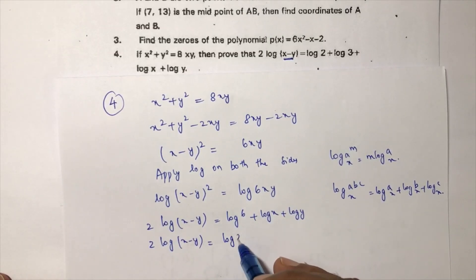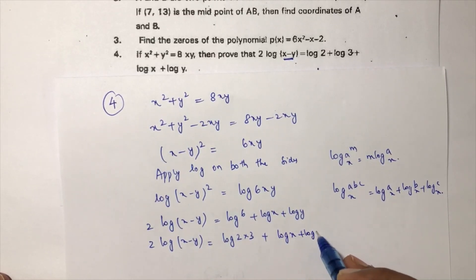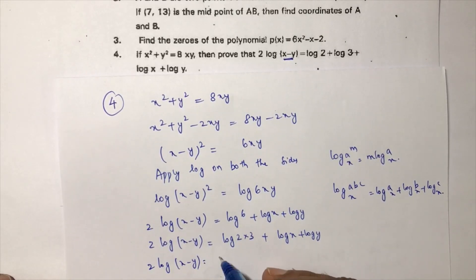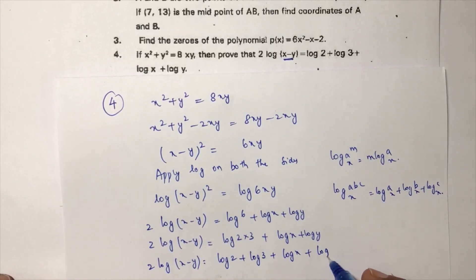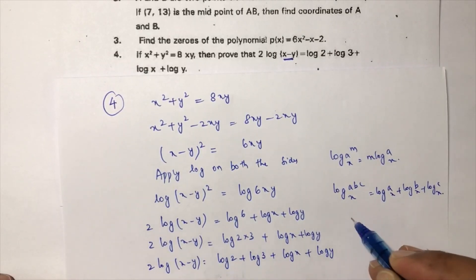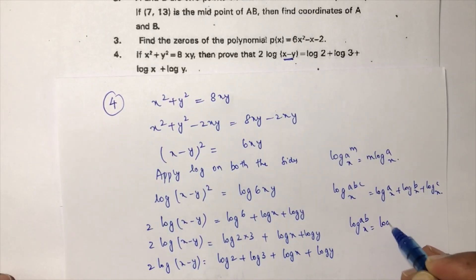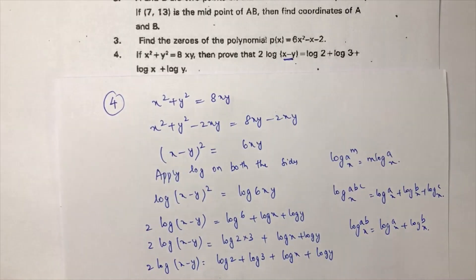Split log 6 as log(2 × 3) = log 2 + log 3. So 2·log(x − y) = log 2 + log 3 + log x + log y. This is the solution using logarithm product and power rules.